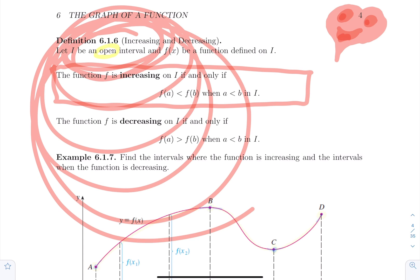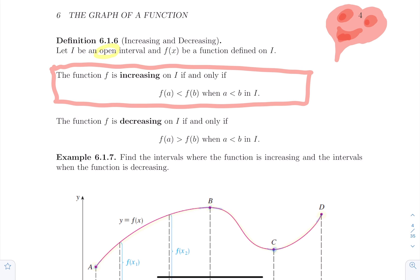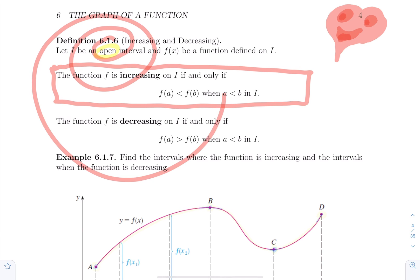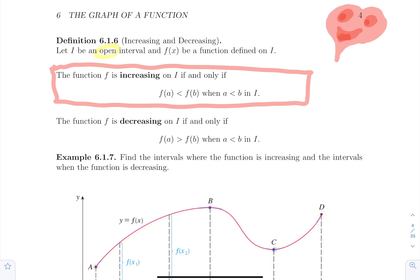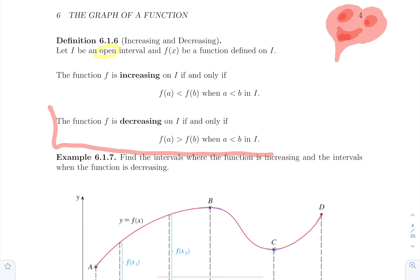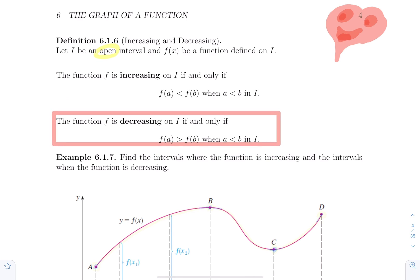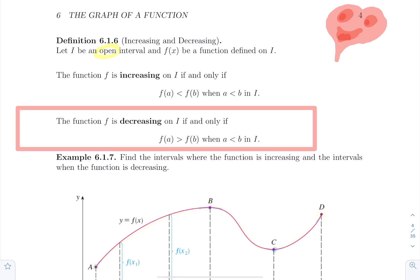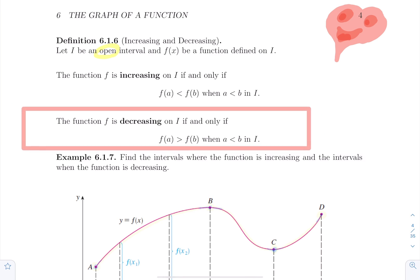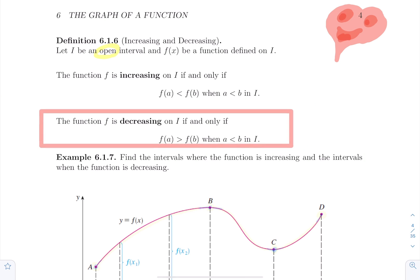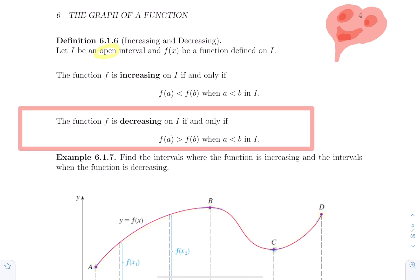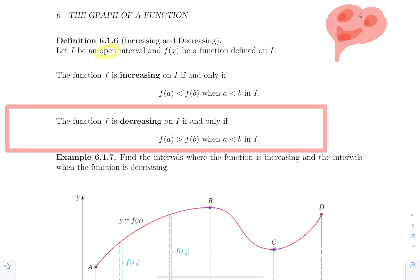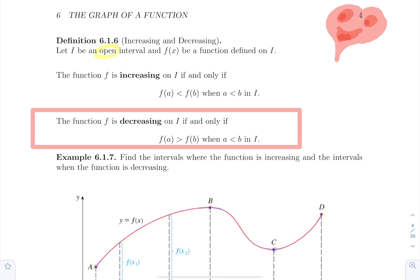Every single answer is always with respect to open intervals. And we say a function is decreasing if it's going down. In mathematical terms, f(a) is strictly greater than f(b) when a is smaller than b, for a and b inside that interval. It's very intuitive: as x goes up, if the function goes up it's increasing; if it goes down it's decreasing.